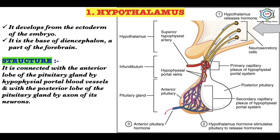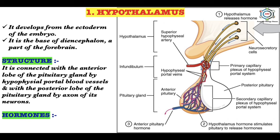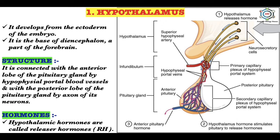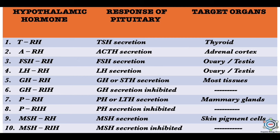According to its structure, the hypothalamus is connected with the anterior lobe of the pituitary gland by the hypophysial portal blood vessels, and with the posterior lobe of the pituitary gland by axons of its neurons. The neurosecretory cells of the hypothalamus, when stimulated, release hormones known as neurohormones via axons into the capillaries. Certain hormones of the hypothalamus are inhibitory in function and are known as inhibitory hormones.